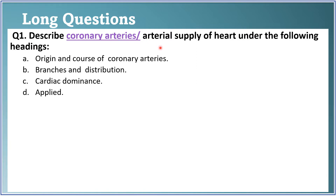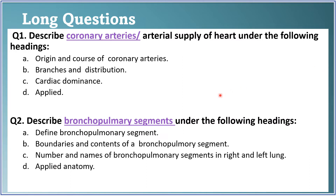The first long question is: describe coronary arteries, or it can be asked as arterial supply of heart. Under the following headings: origin — from where the coronary arteries arise; course of the right and left coronary arteries; branches and the areas of the heart supplied by them; a note on cardiac dominance; and applied anatomy including angina pectoris and the anatomical basis for myocardial infarction.